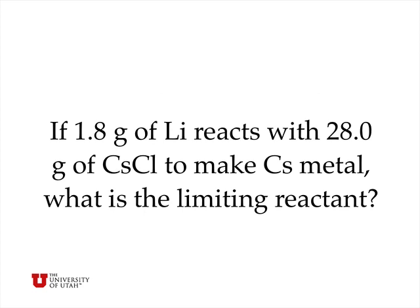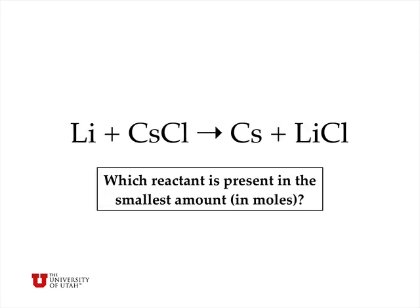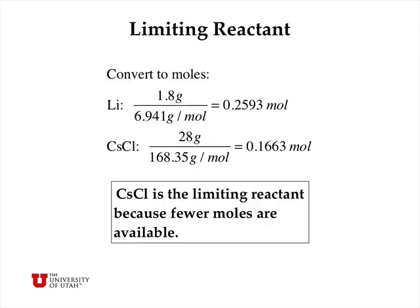Another example: if 1.8 grams of lithium reacts with 28 grams of cesium chloride to make cesium metal, what's the limiting reactant? First, we write the balanced reaction: lithium reacts with cesium chloride to make cesium plus lithium chloride. There's a one-to-one relationship between the moles of lithium and the moles of cesium chloride. We ask which reactant is present in the smallest amount, because that will be the limiting reactant.